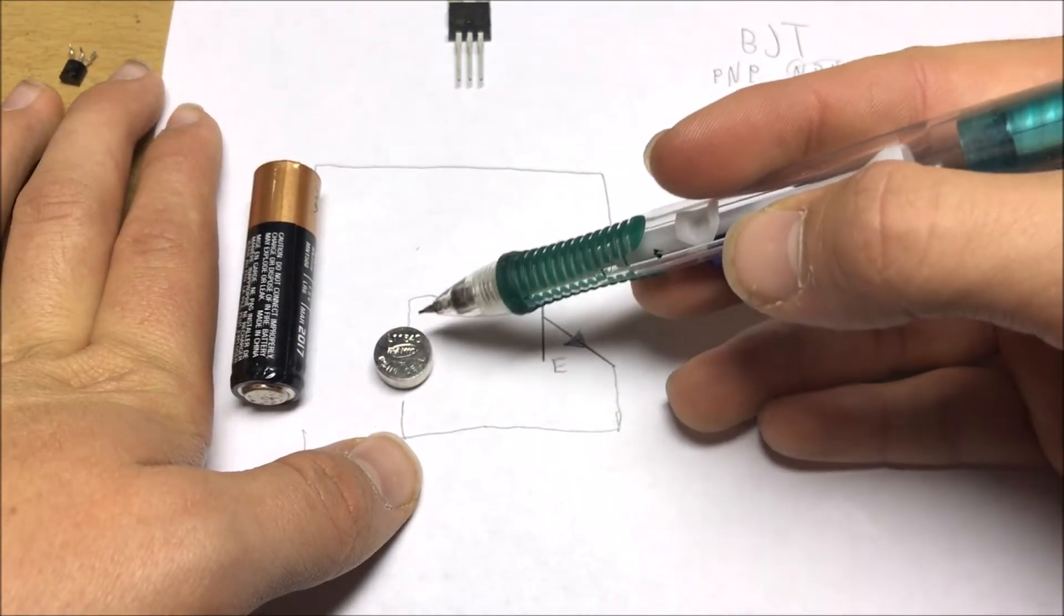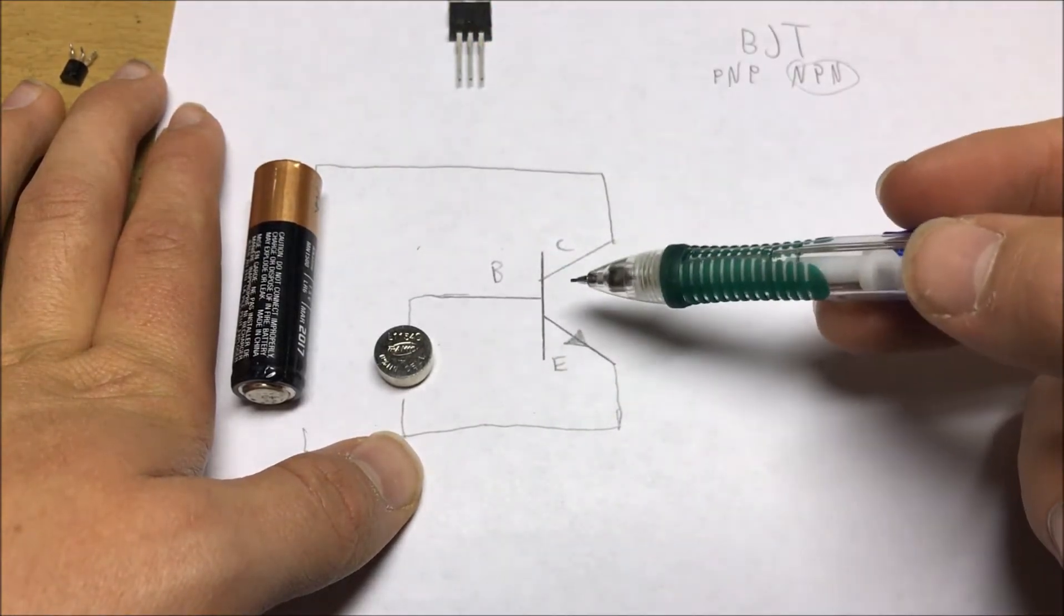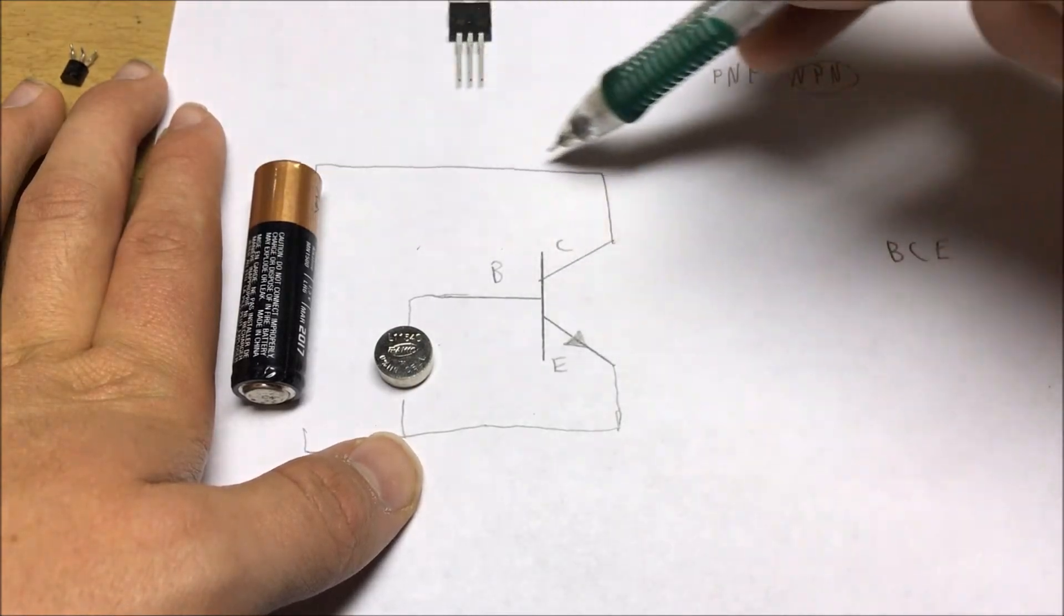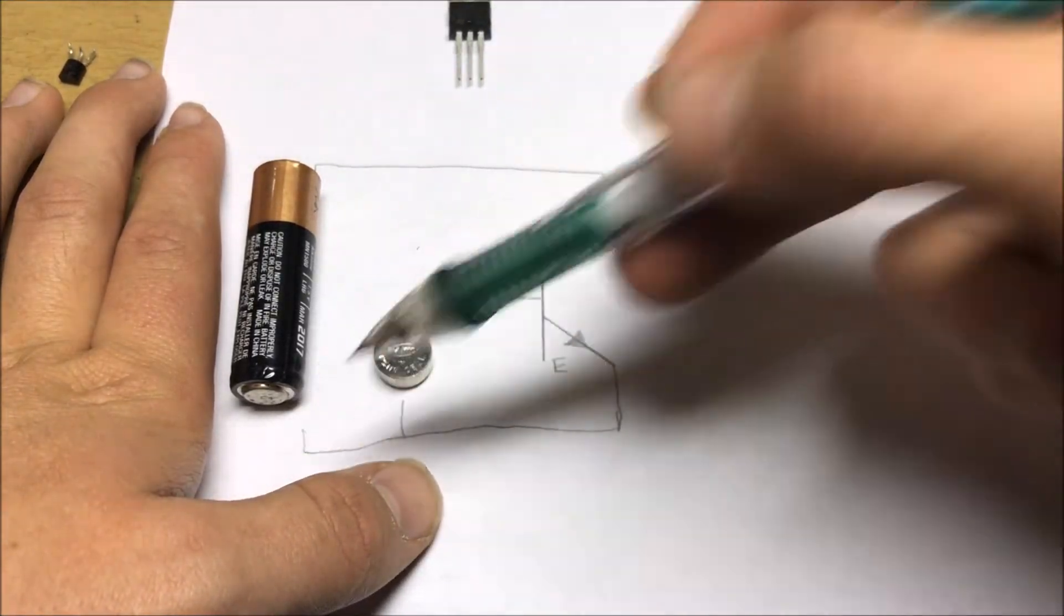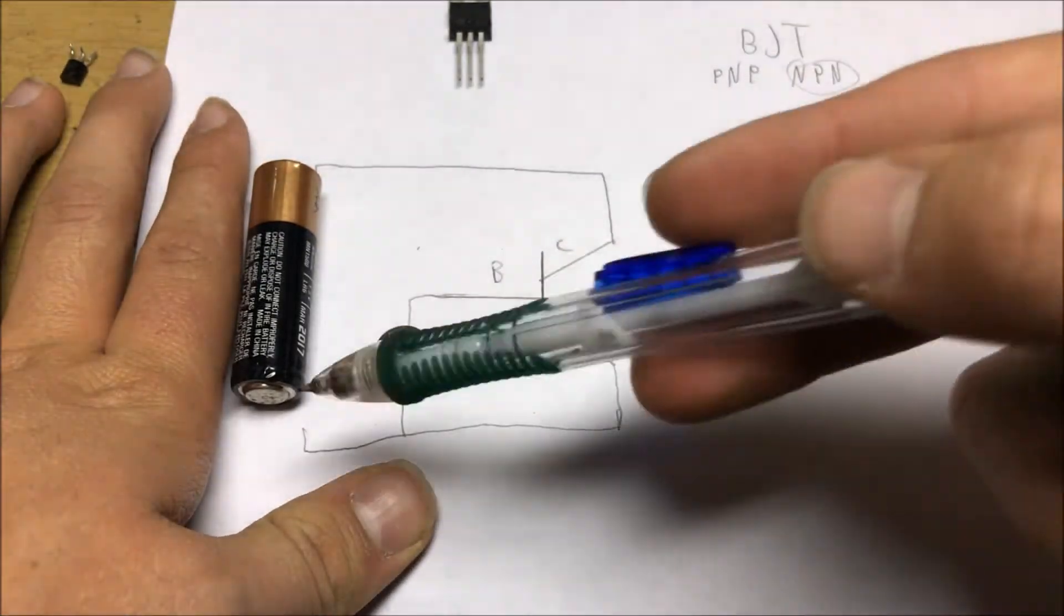what's going to happen is a little bit of current is going to flow into the base and through the emitter of the transistor, and that's going to open this big switch from emitter to collector, and allow a lot of current to flow through here. Now the electrons are actually flowing the opposite direction. This will help in my other explanation.